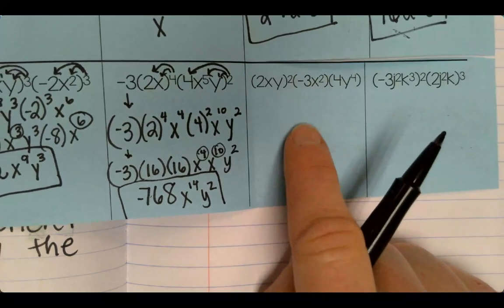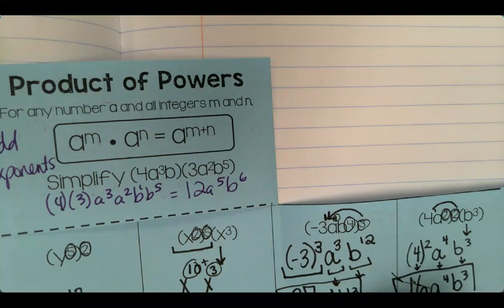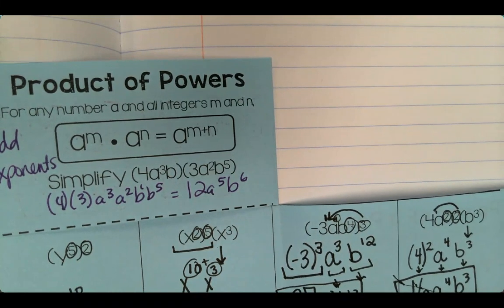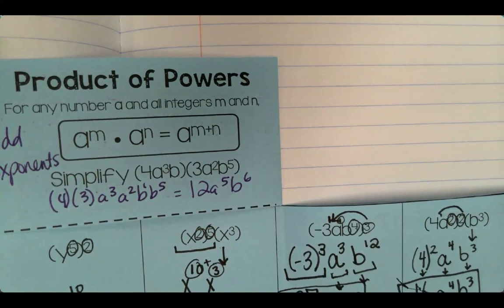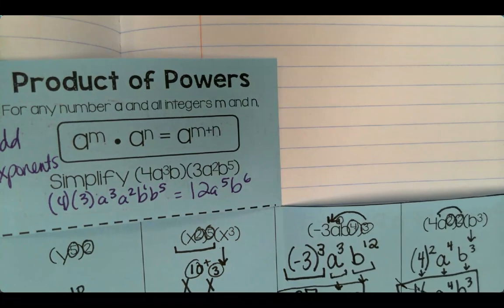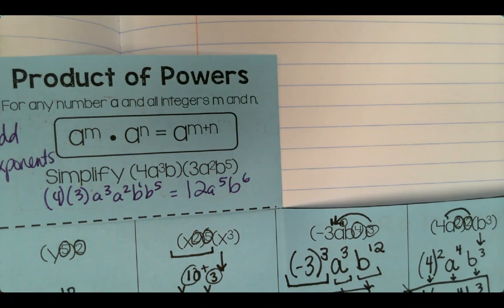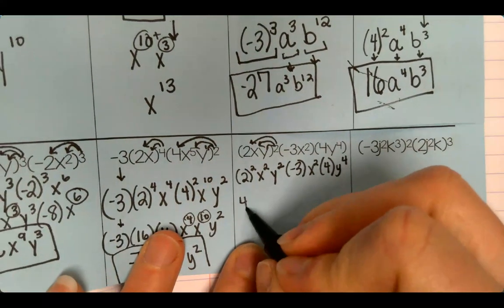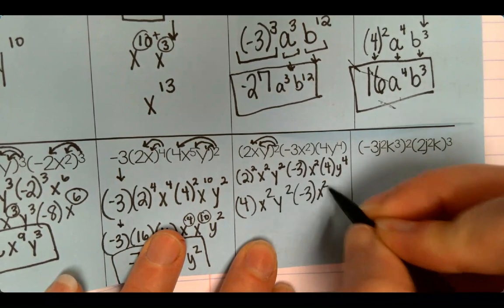All right. So now what I want you to do is I want you to start on this one. Go ahead and do this one. I'm going to remove mine so you can't see it. You're going to do it. And we're going to see how you do. Go ahead and separate them out, though. Okay, so this is what I have so far. I'm going to go ahead and finish it. 4. x squared, y squared, negative 3. x squared, y4. Then you can go ahead and multiply.